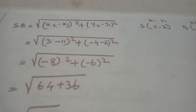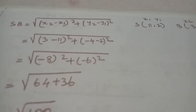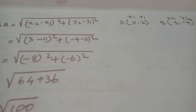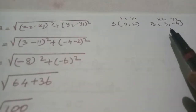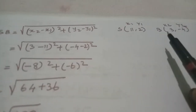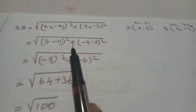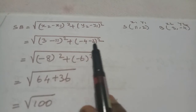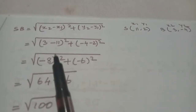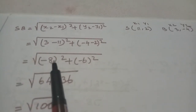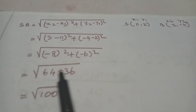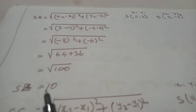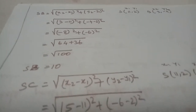SB = √[(x2 - x1)² + (y2 - y1)²]. S is (11,2) and B is (3,-4). So SB = √[(3-11)² + (-4-2)²] = √[(-8)² + (-6)²] = √[64 + 36] = √100. So SB = 10.